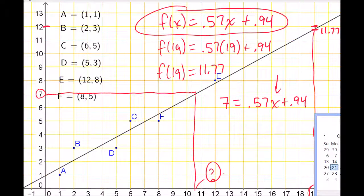This is a fairly straightforward equation to solve. I'm going to begin by subtracting 0.94 from both sides. When I do that, I get 6.06 equals 0.57x.